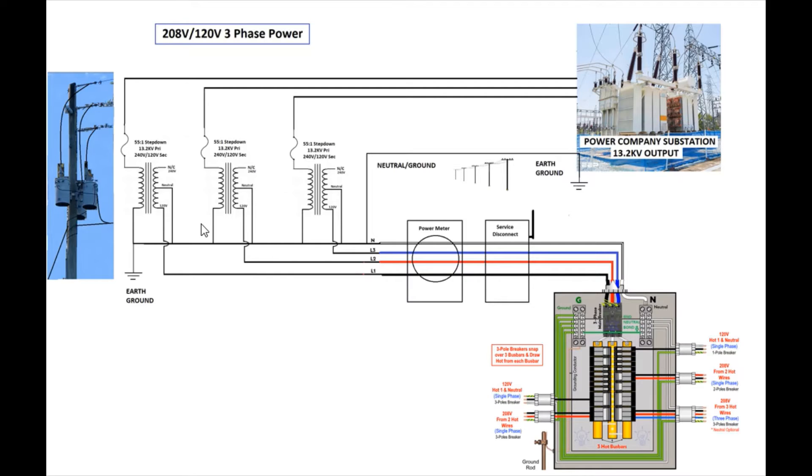I think these are probably standard types of transformers, the 55 to 1 step down where they have a 240/120 with a neutral secondary, but we're not using the 240 output at all on any of the three, so there's just no connections there. We just take the three individual transformer secondary outputs and run them through our three-phase power meter here and through our little disconnect switch fuse panel and over to our circuit breaker box.